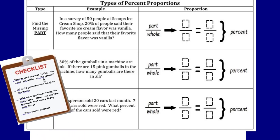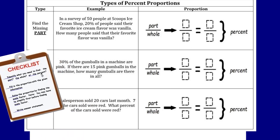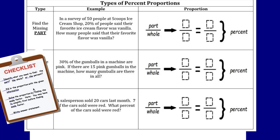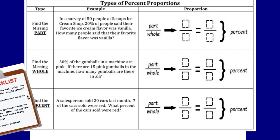Go ahead and pull out your handout, the types of the percent proportion. There's a little checklist that goes with it. On the checklist, it says you need to identify what you need to find: do you need to find the part, do you need to find the whole, or do you need to find the percent?